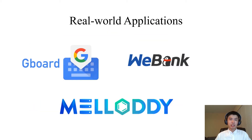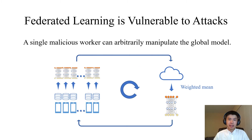In the real world, federated learning has been applied to multiple scenarios. For instance, Google uses federated learning in their GBoard application to predict the next word. WeBank deploys federated learning to collaboratively predict credit risk. Melody uses it for drug discovery. However, we need to take the security problems that federated learning faces seriously. A previous work has shown that a single malicious worker can arbitrarily manipulate the global model when the traditional weighted mean aggregation is used, indicating that more robust methods are needed.